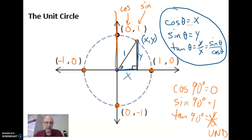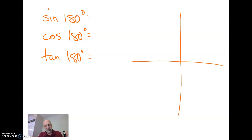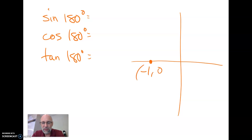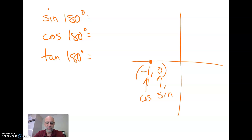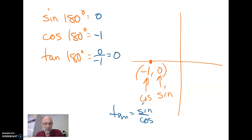Let's find the sine, cosine, and tangent of 180 degrees. We figure out where it terminates — it lands right here. On the unit circle, that point is (−1, 0). The x-coordinate is the cosine and the y-coordinate is the sine. The tangent of 180 degrees is sine over cosine: 0 divided by negative 1 is 0. So now we know the sine, cosine, and tangent of 180 degrees.